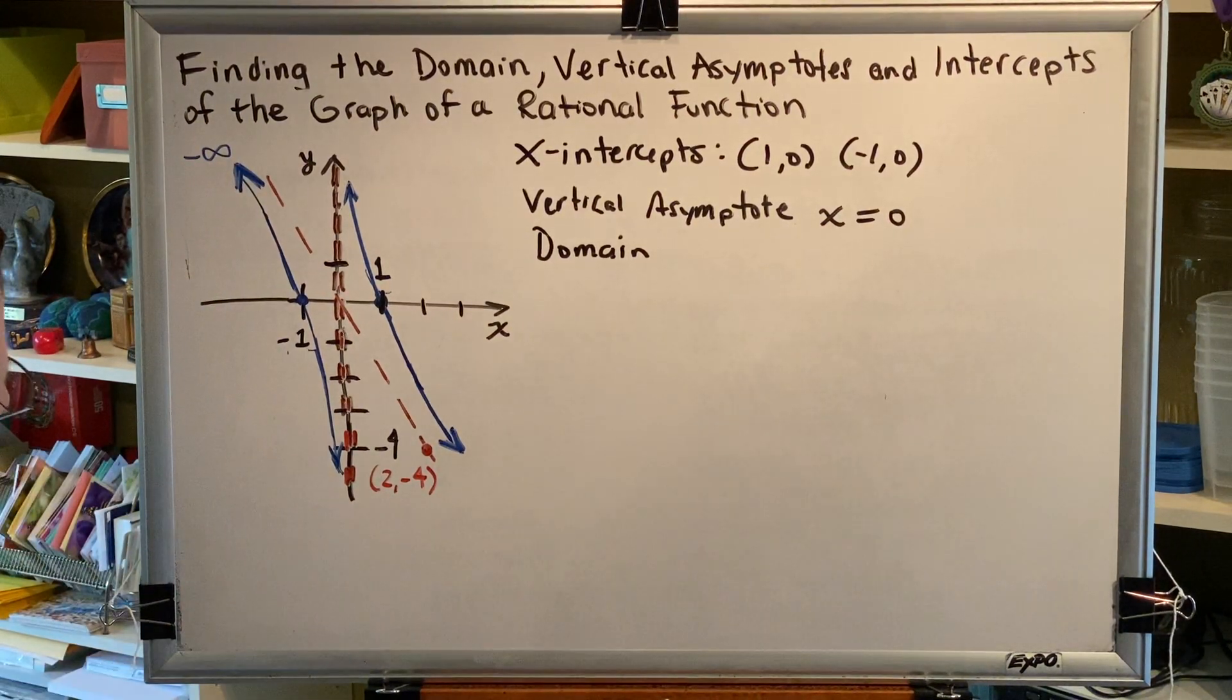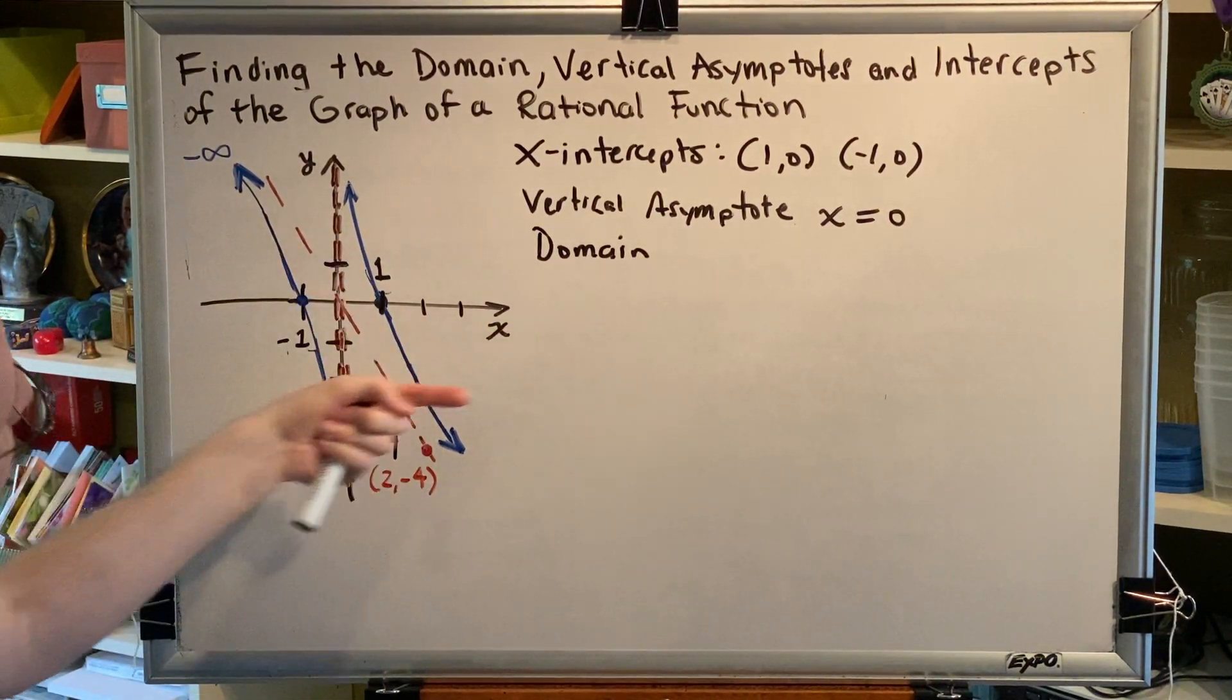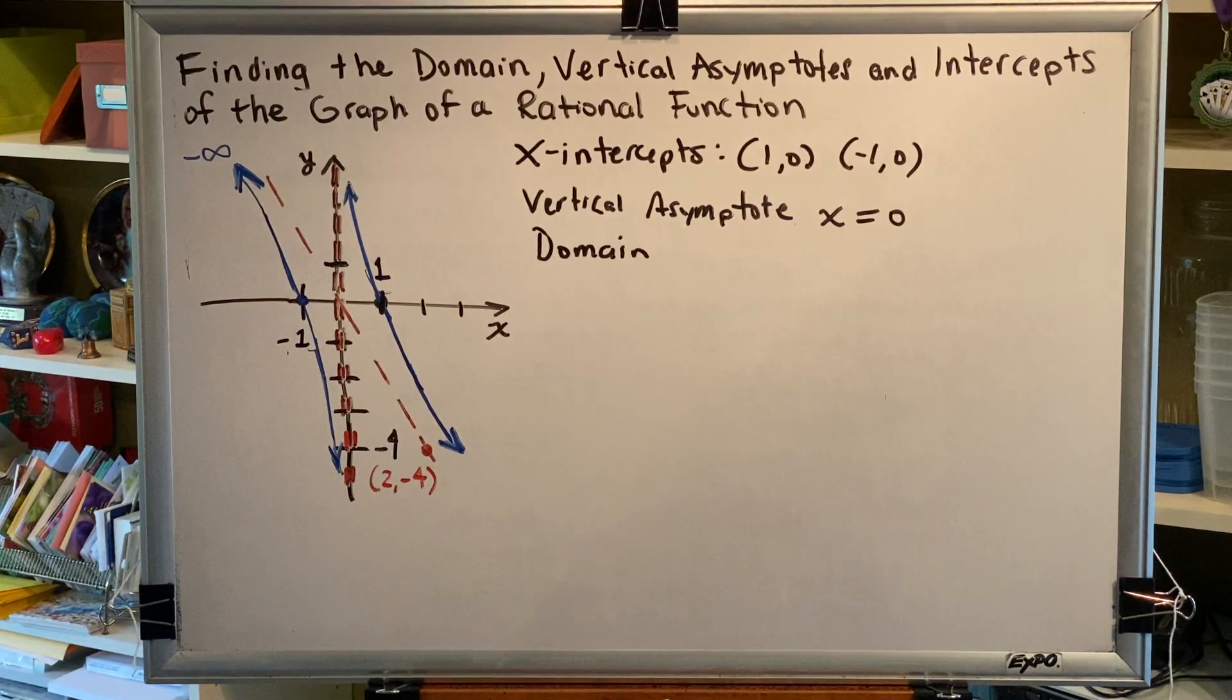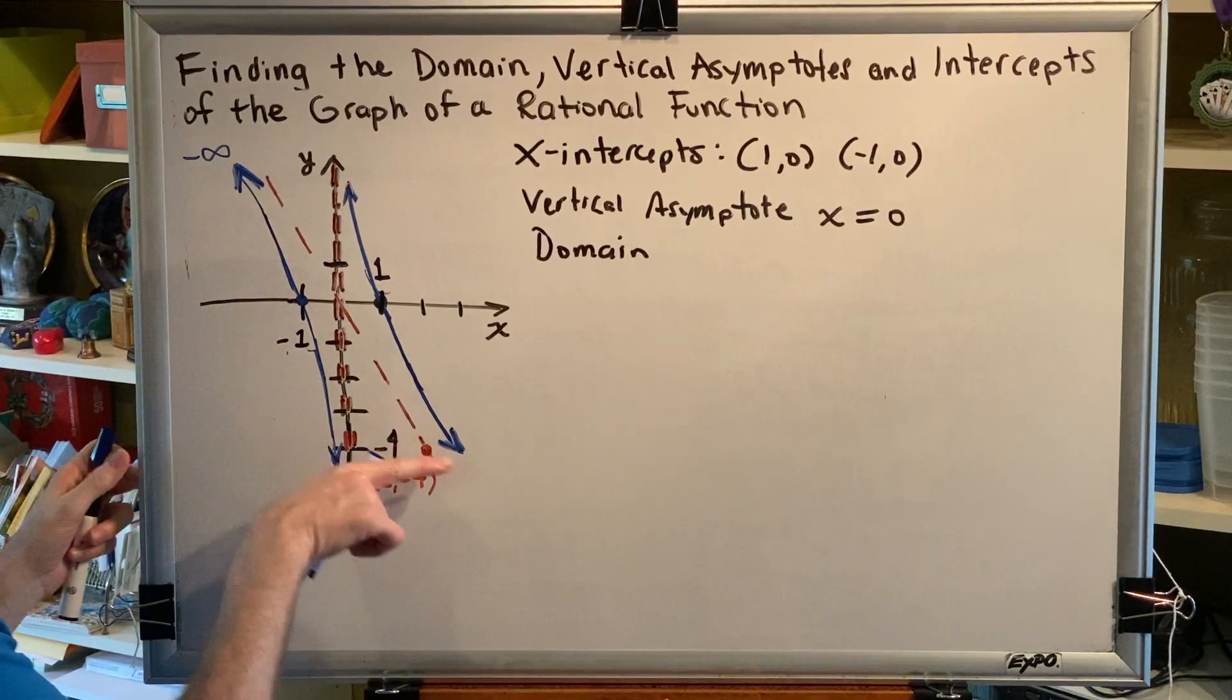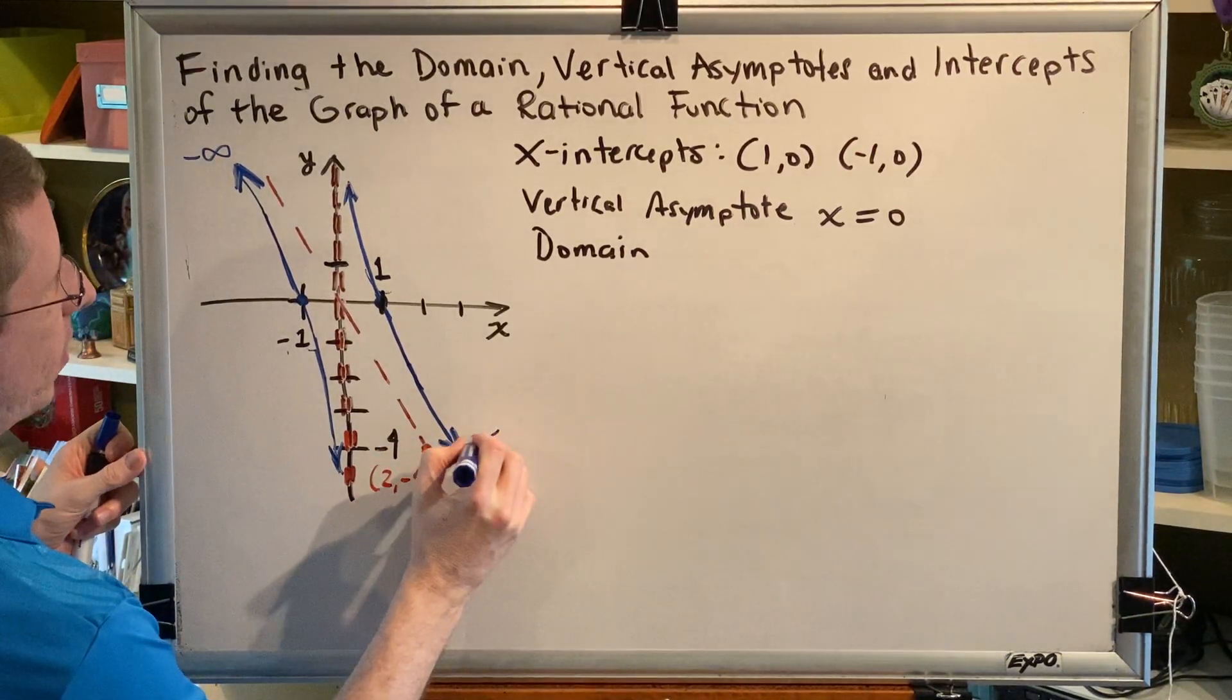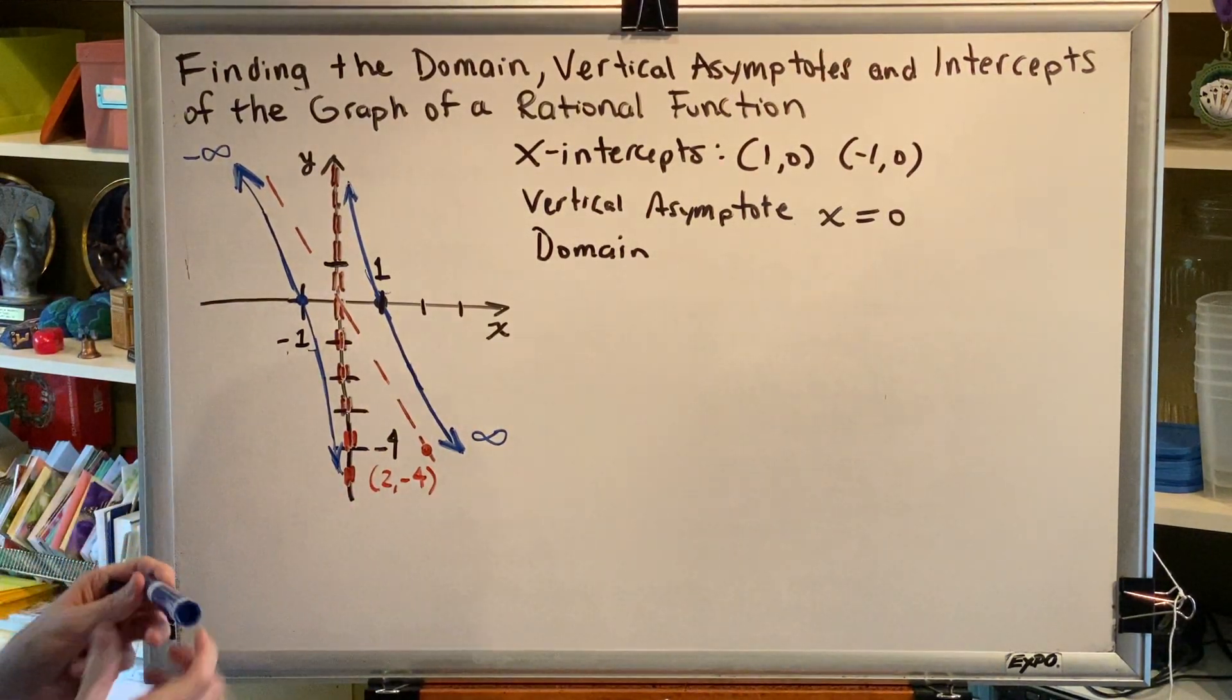This arrowhead is pointing down and right. Again, domain measures left or right. So we don't care about the down, we only care about the right. This is pointing to the right forever. So its contribution to the domain would be positive infinity.